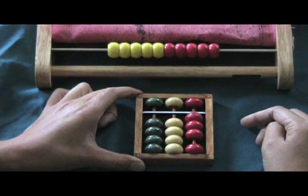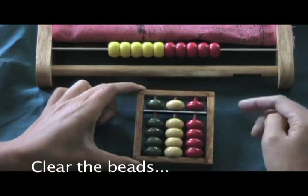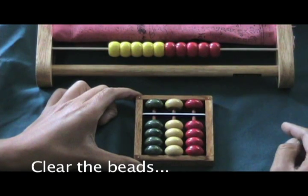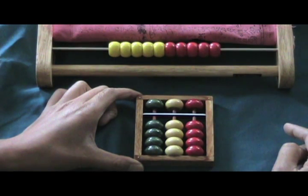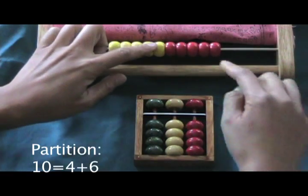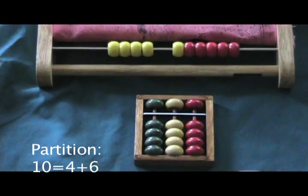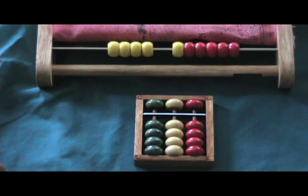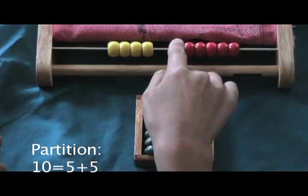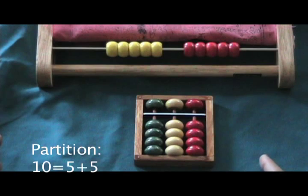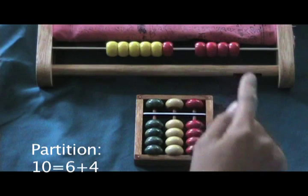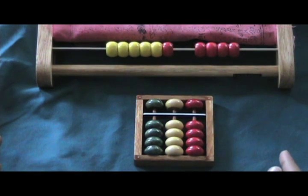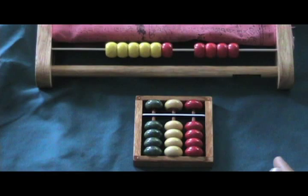Now we'll go on with subtraction with the 10 bead. We're going to make use of partitions of 10. Let's look at 10 as 4 plus 6, and also look at 10 as 5 plus 5, and also as 6 plus 4. Those are the partitions we need for the particular exercise we're going to do now.